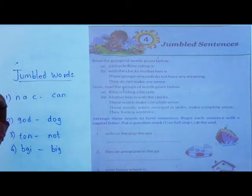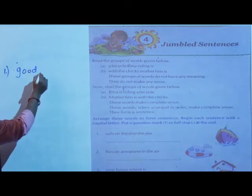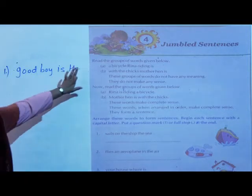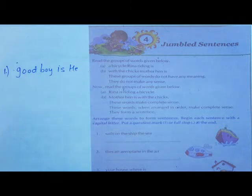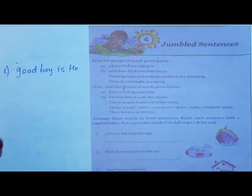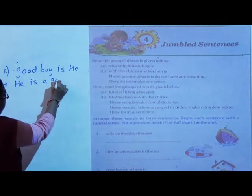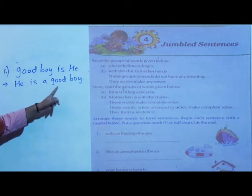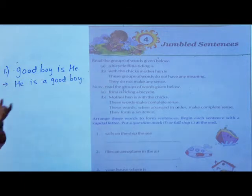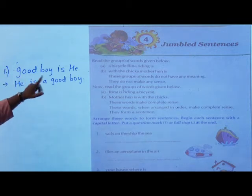Now in this same way, we are going to see jumble sentences through our topic, lesson number four. For example: 'Good boy is he.' Does it make complete sense? No, it doesn't have any meaning because it is not in a systematic manner. When we write it in a systematic manner, then it gives meaning: 'He is a good boy.' This sentence has a complete meaning. Unsystematic word groups like this are called jumble sentences — not in serial order, not written systematically.